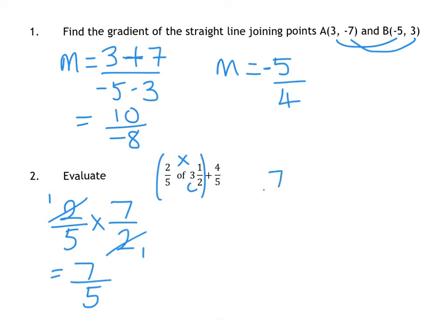So then you have 7 over 5 plus 4 over 5 for your second sum. And it's really nice that they've actually both got a common denominator already, so you just add them together and it gives you 11 over 5. That one was actually a bit simpler than normal.